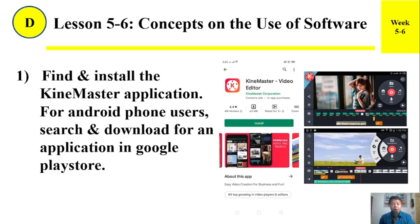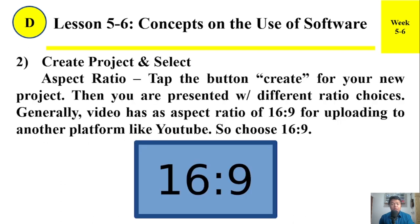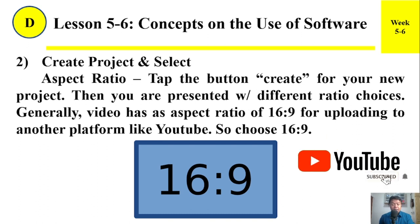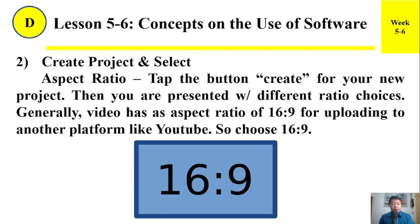Number one: Find and install the KineMaster application. For Android phone users, search and download the application in the Google Play Store. Number two: Create a project and select aspect ratio. Tap the button 'Create' for your new project. Then you are presented with different ratio choices. Generally, video has an aspect ratio of 16 by 9 for uploading to platforms like YouTube, so choose 16:9.